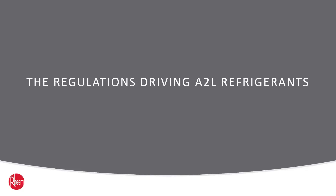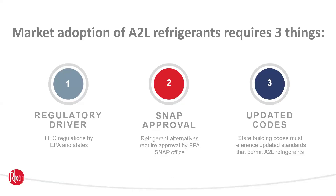You may have heard about A2L refrigerants for some time but wondered when they're actually going to arrive in the market. I like to describe broad market adoption of A2L refrigerants as requiring three things: one, a regulatory driver to require low global warming potential alternatives; two, EPA SNAP approval — the clearinghouse for refrigerant replacements by application; and three, updated building codes, because in order to install appliances containing flammables, codes must be updated to allow it.